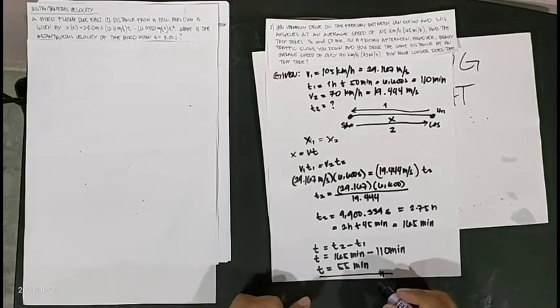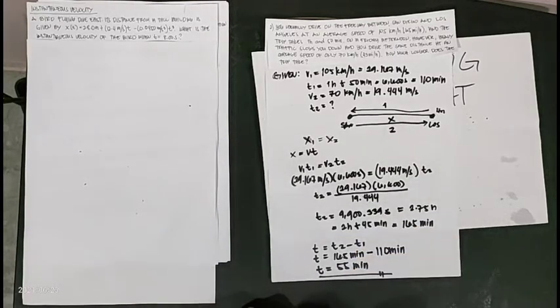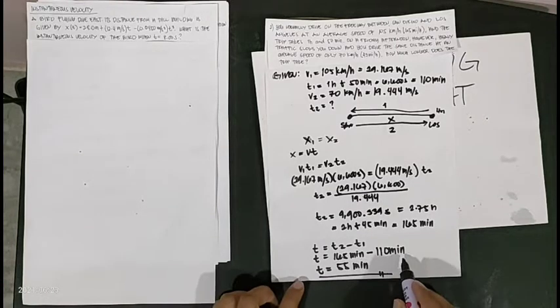So, when traveling with traffic, it takes 55 minutes longer — the normal trip is 1 hour and 50 minutes, or 110 minutes.